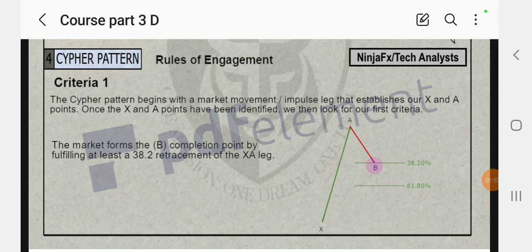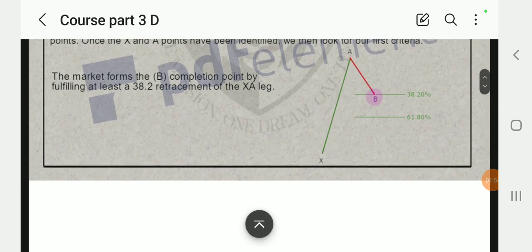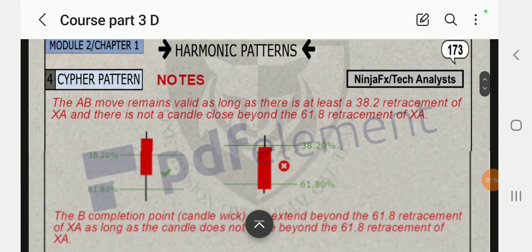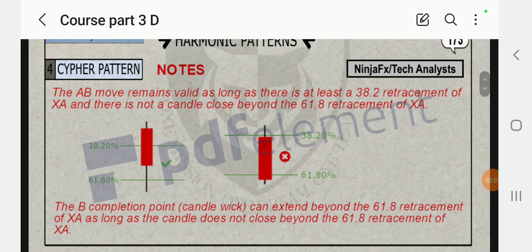The Fibonacci retracement tool works efficiently with every pattern as long as you know how to use it. The AB move remains valid as long as there is a 38.2 retracement of XA and there is not a candle close beyond 61.8 retracement of XA. The B leg completion point candle can extend beyond 61.8 retracement of XA as long as the candle does not close beyond 61.8 retracement of XA.